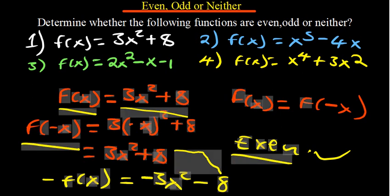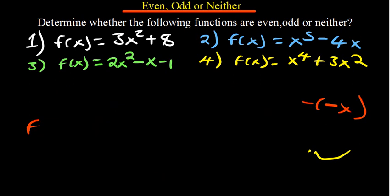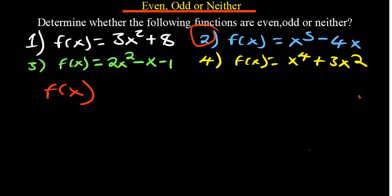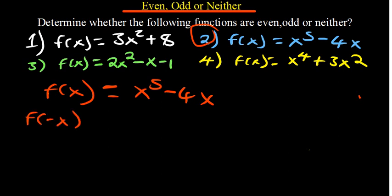You can pause the video and try out the other questions before checking the solutions. For question two, f(x) = x⁵ - 4x. We find f(-x) by plugging in -x: raising a negative value to an odd power gives a negative, so f(-x) = -x⁵ + 4x.